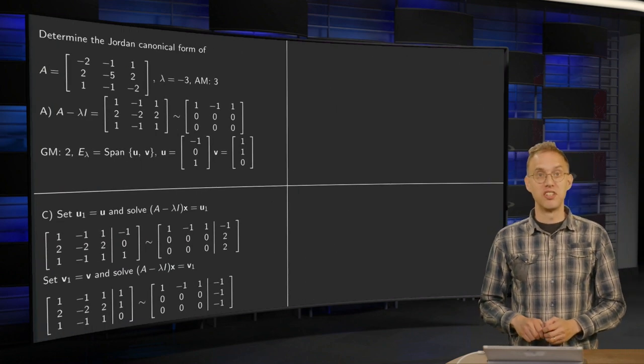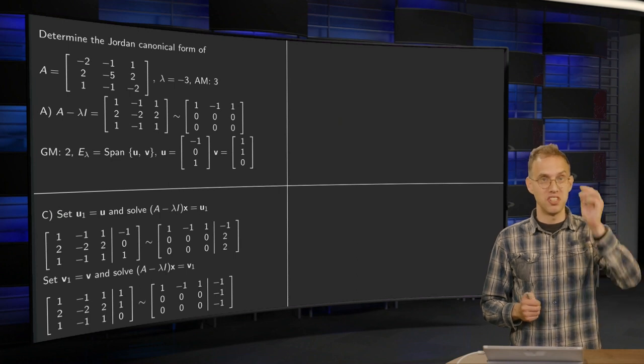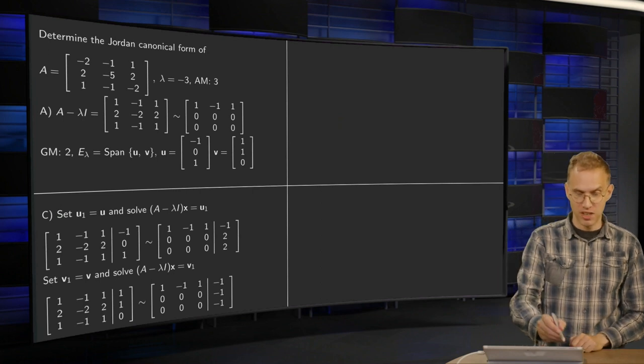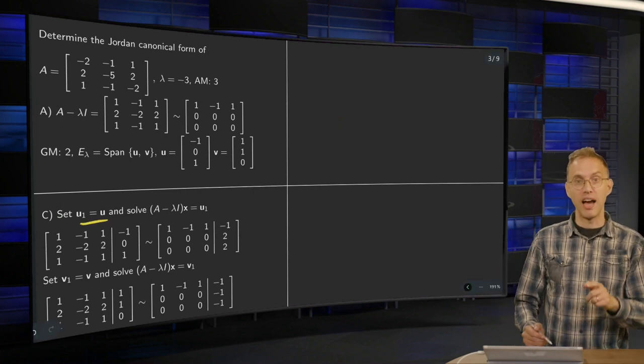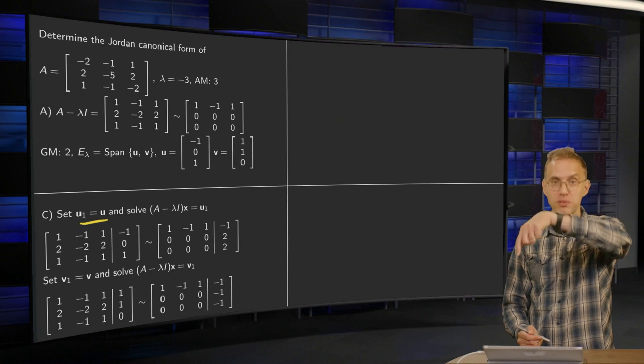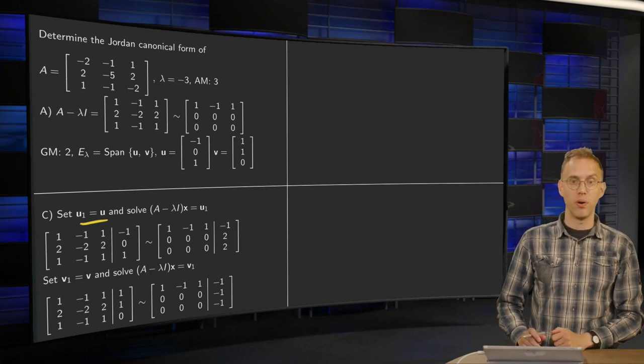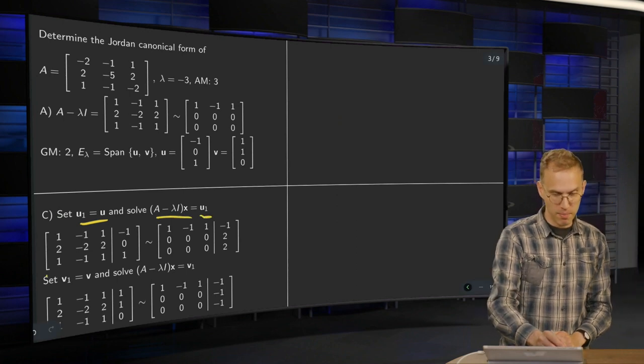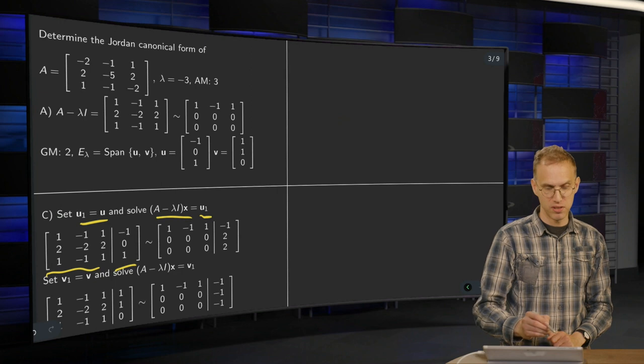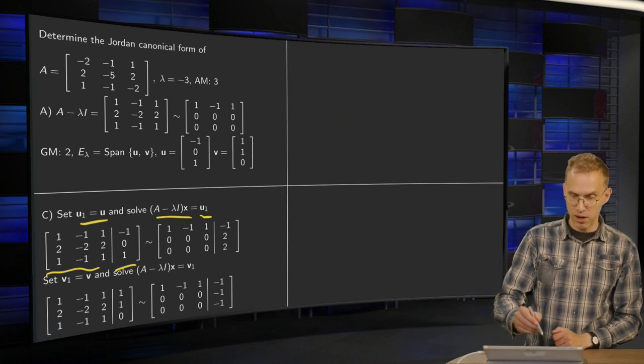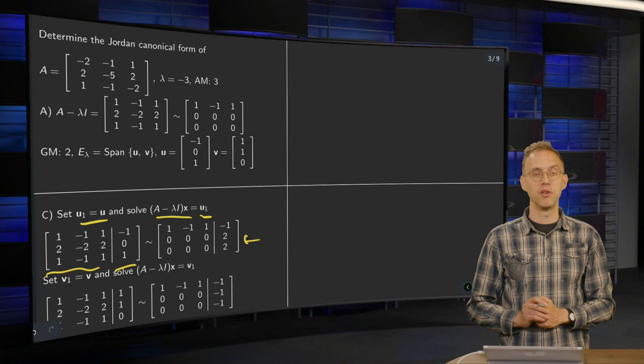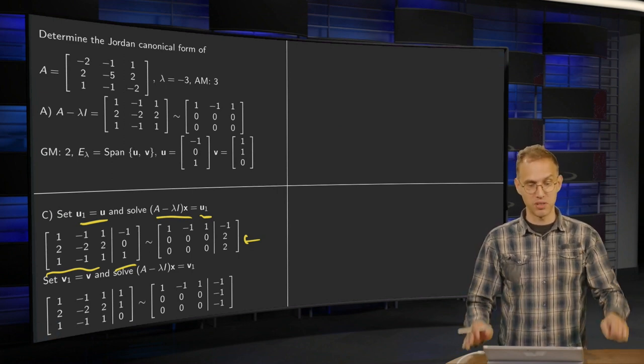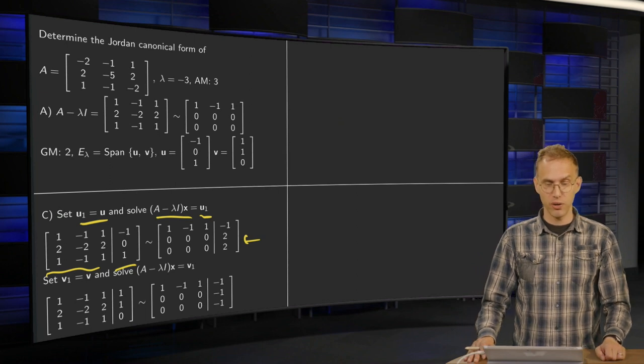Now, let's give it a try. What did we do? As endpoint, we set the eigenvector. So let's try to do that. So as our endpoint, we set u_1 equals u and we try to move up the ladder by solving (A minus lambda I)x equals u_1. So here we have A minus lambda I and we augment with u_1 and then we reduce and the system becomes inconsistent.